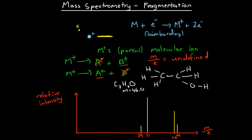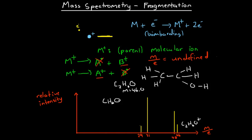Therefore the peak at mass-to-charge ratio of 46 will be caused by this parent molecular ion — C₂H₆O⁺. Now when we're analyzing which peak has been caused by which fragment, it's important to look at the molecular structure and keep it in mind. For example, we might think a carbon could disappear to give a fragment C H₆O, however looking at the molecular structure we can see there's no way to lose just a carbon — if that carbon were removed, the hydrogen atoms on it would also have to be removed with it.